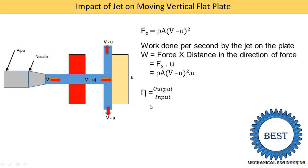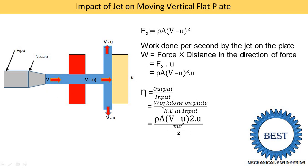Next, we find efficiency: η = output / input. The output is the work done by the plate: ρA(V − U)² × U. The input is the kinetic energy of the water coming from the nozzle: KE = ½MV², where M = ρAV (using nozzle velocity V, not relative velocity, because this is the input). So efficiency η = ρA(V − U)²U / (½ρAV · V²).